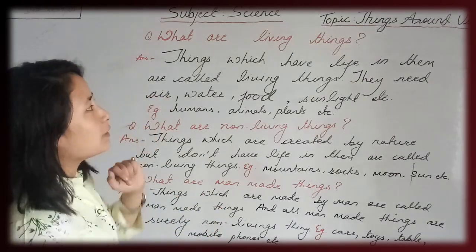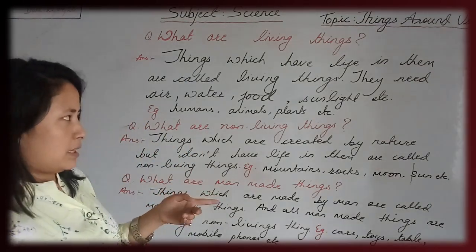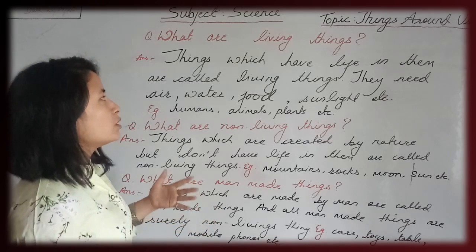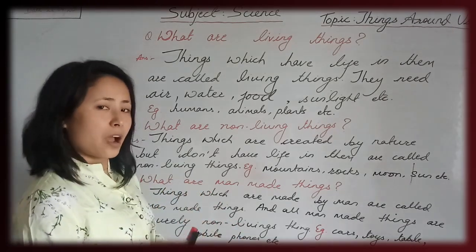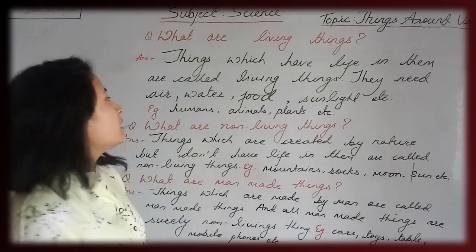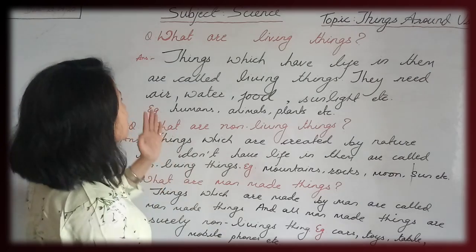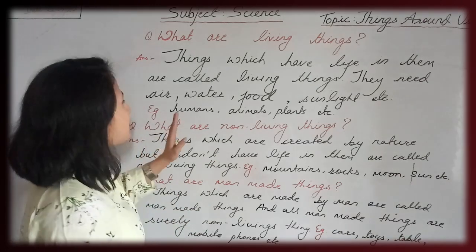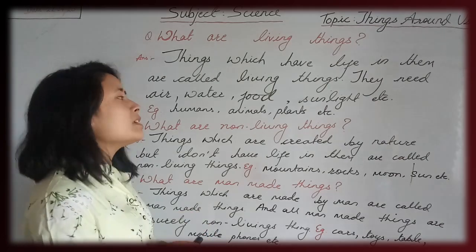What are living things? Things which have life in them are called living things. They need air, water, food, sunlight, etc. Examples include humans, animals, and plants. Even plants need food to grow.